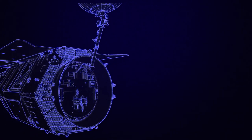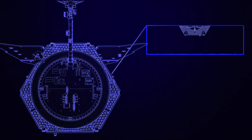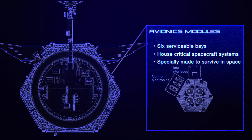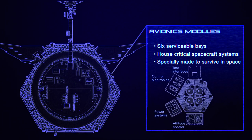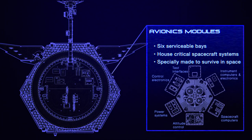Roman's critical systems, such as power and data handling, are located in six modules at the spacecraft's rear. These include six rotating reaction wheels that control where the spacecraft points, nearly one ton of propellant for larger movements, and a 10-terabyte data recorder.